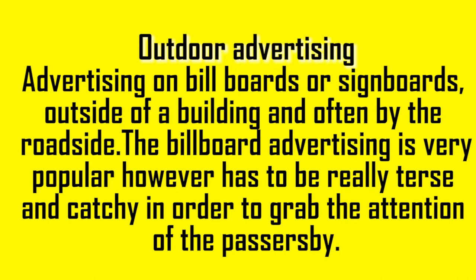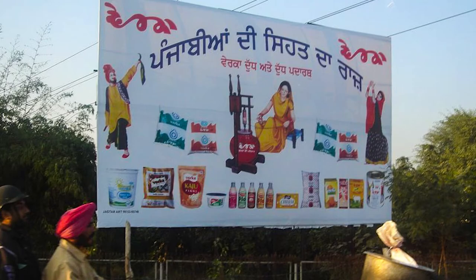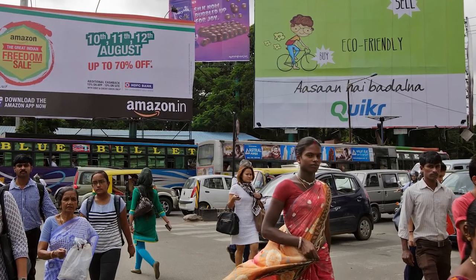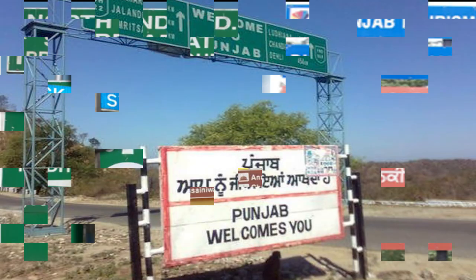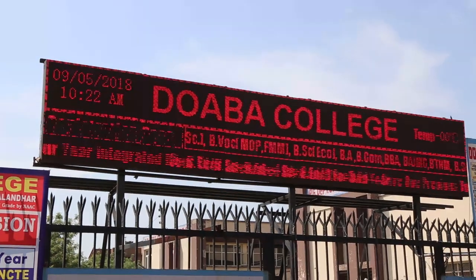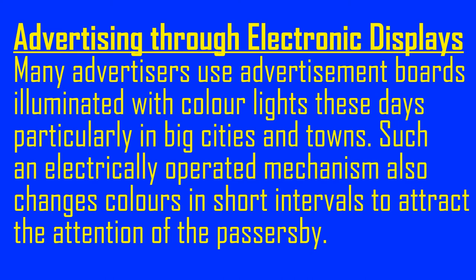Outdoor advertising refers to advertising on billboards or signboards outside of a building, often by the roadside. Billboard advertising is very popular but has to be really catchy and attractive to grab the attention of passersby. Outdoor media are extensively used by manufacturers, dealers, hotels, restaurants, and academic institutes. You can see hoardings, billboards, signboards, banners, neon signs, and electronic displays. Many advertisers use illuminated advertisement boards with colored lights, particularly in big cities and towns, and electrically operated mechanisms that change colors at short intervals to attract attention.